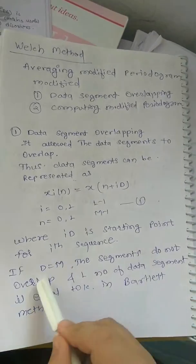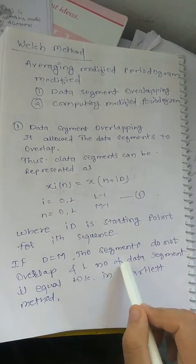If D equals M, the segments do not overlap, and L number of data segments is equal to K in Bartlett method.